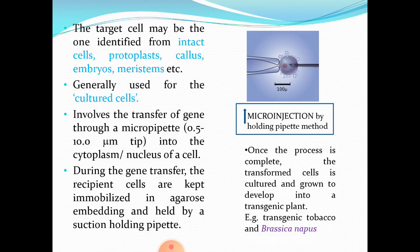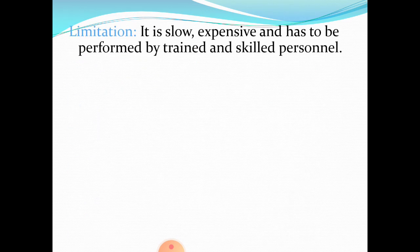This technique has success stories: transgenic tobacco and transgenic Brassica napus have been produced by this microinjection method. However, this method has limitations in the sense that it is slow and expensive, and it needs to be performed by trained and skilled personnel. This is the major limitation of microinjection.